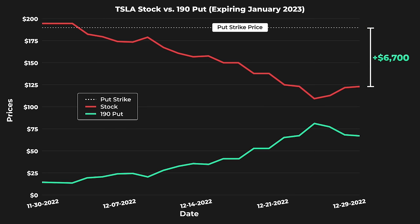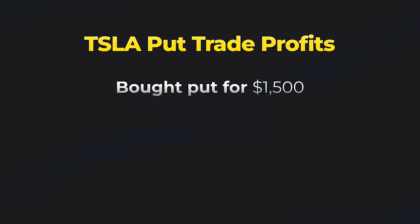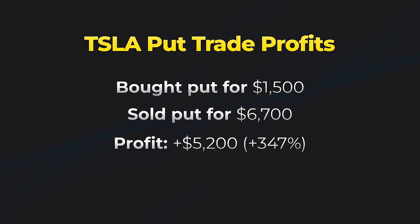This would result in a $67 profit per share, or $6,700 on 100 shares of stock. A trader who purchased the put at the initial cost of $1,500 could have sold the contract for $6,700 at the end of December, securing a $5,200 profit from their initial $1,500 investment.